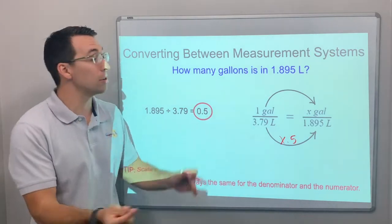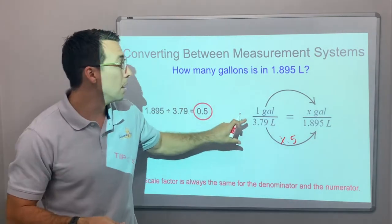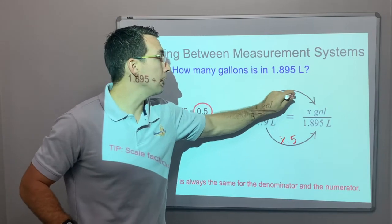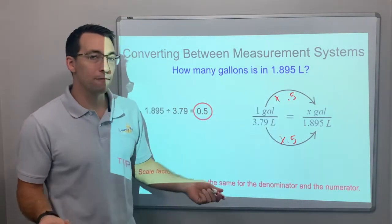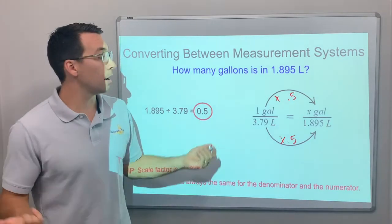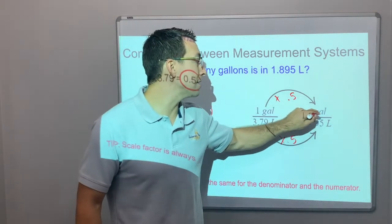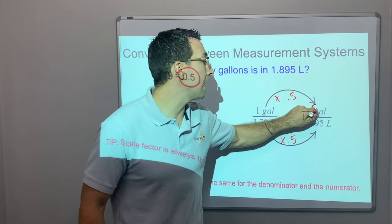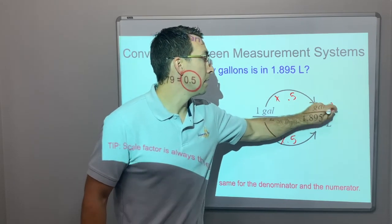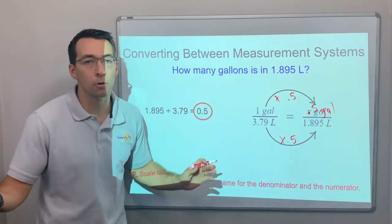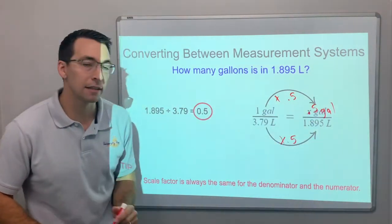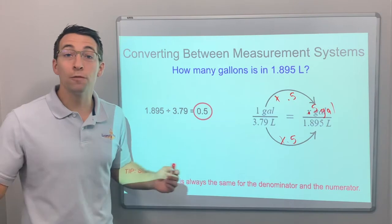What we do to the top we have to do to the bottom. So 1 gallon times 0.5—what's the answer? 1 times 0.5, so half of 1 is 0.5. Our answer is 0.5 gallons. That completes the proportion: x gallons equals 0.5 gallons.